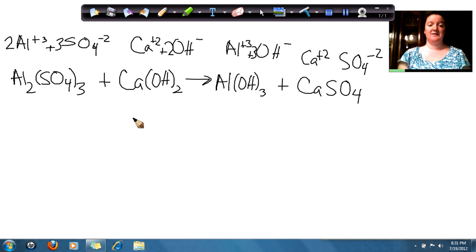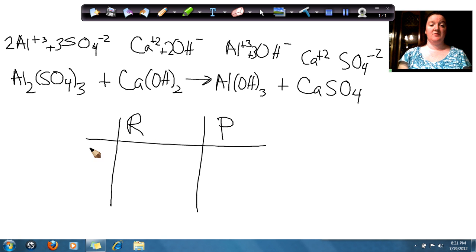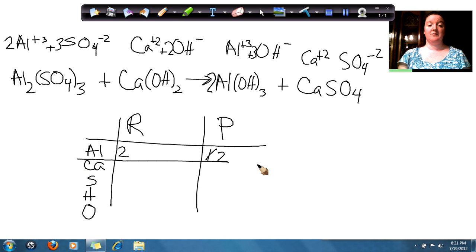So now let's count everything to see if our reactants and products match. First we have Aluminum. Then we have our Calcium. We have our Sulphur, our Hydrogen, and our Oxygen. So if I look at Aluminum, on this side I have 2 Aluminums. But on this side I only have 1 Aluminum. So what I want to do is add a 2 in front of Aluminum Hydroxide. So now my Aluminums balance out.